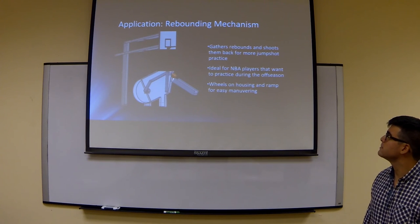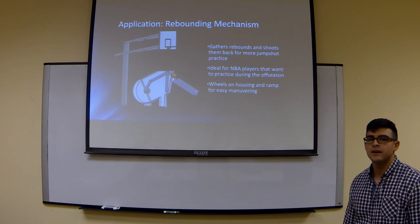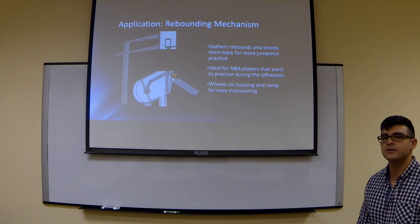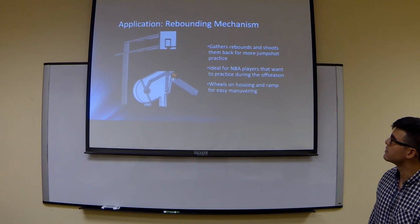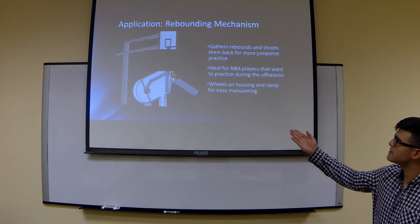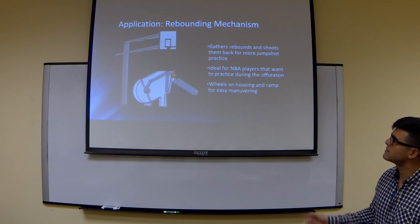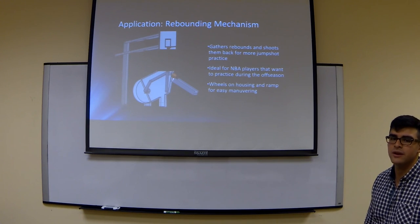For our four-bar mechanism, we created a rebounding mechanism, which is useful in the NBA. It is useful for any player who wants to practice their shots, and as a player shoots a ball, it will go through the basket, fall down through a net that will then place the ball right in its location given, and then once that happens, it will turn on the electric motor, which will then move the linkage and hit the ball back to you and push it down the ramp.